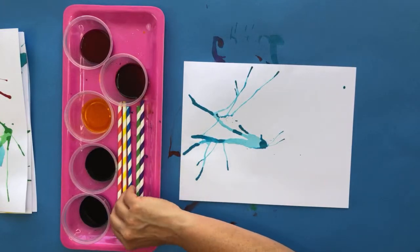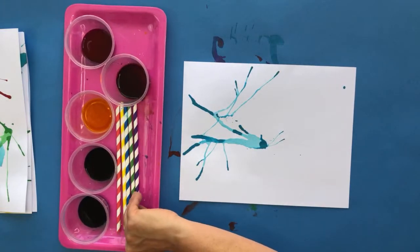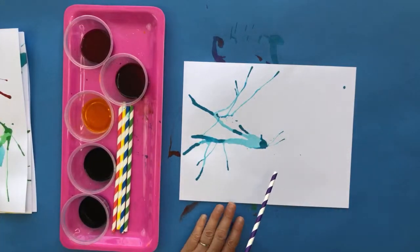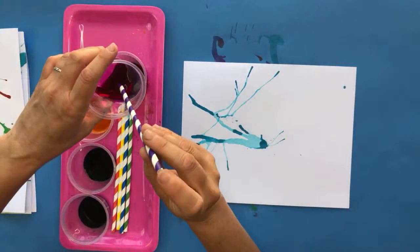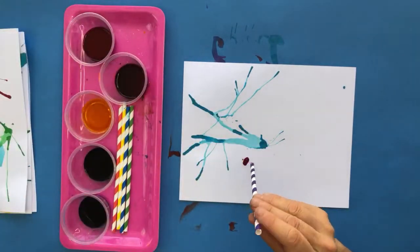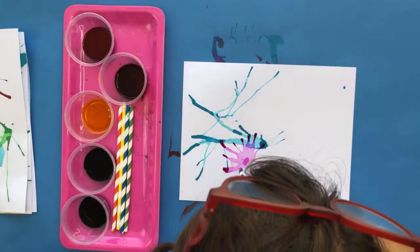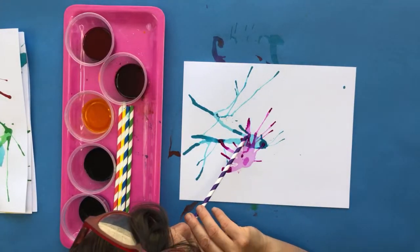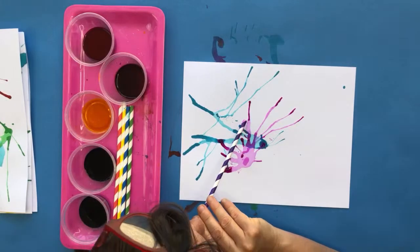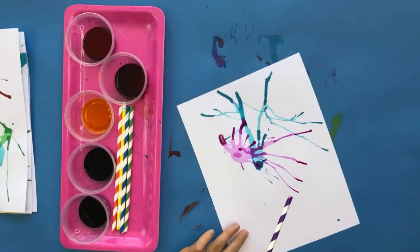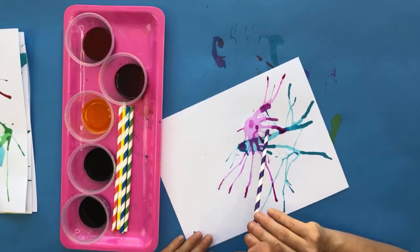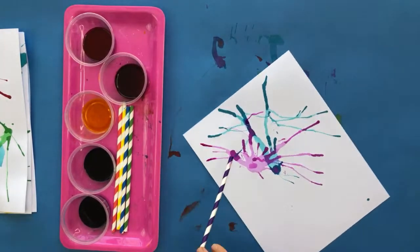And what you should notice you guys as you do this is that depending on the way you blow, if you blow straight down you're going to get a different type of pattern. I'll try that. Then you would if you go at an angle. So part of this and the magic of this is really like experimenting with how you blow on the ink.